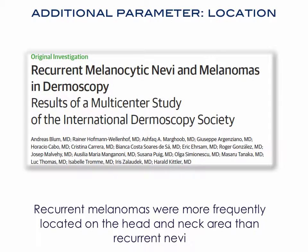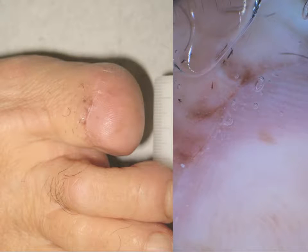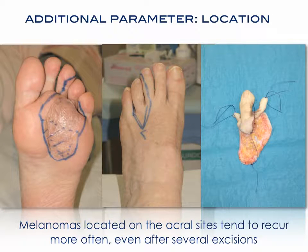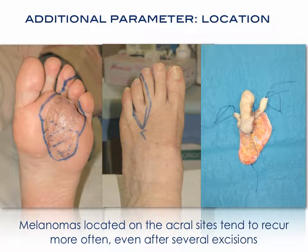One additional parameter to evaluate is the location. In a study from the International Dermoscopy Society, recurrent melanomas were more frequently located on the head and neck area than recurrent nevus. Another location where melanoma tends to recur more frequently is the acral sites; melanomas located on acral sites tend to recur more often even after several excisions.